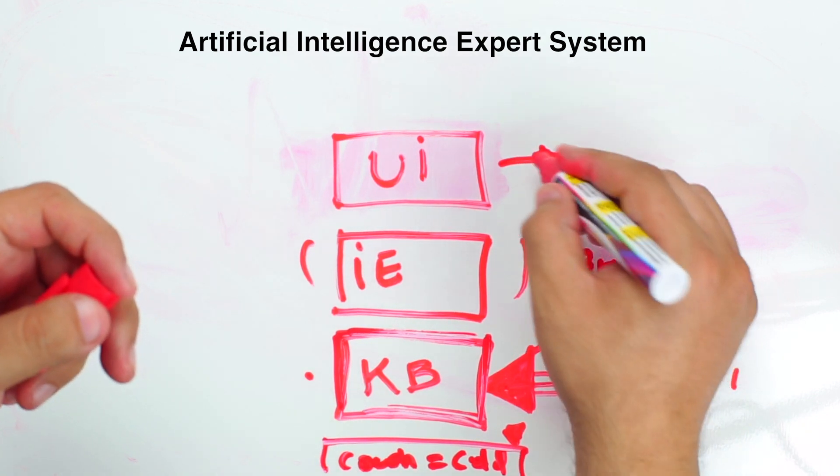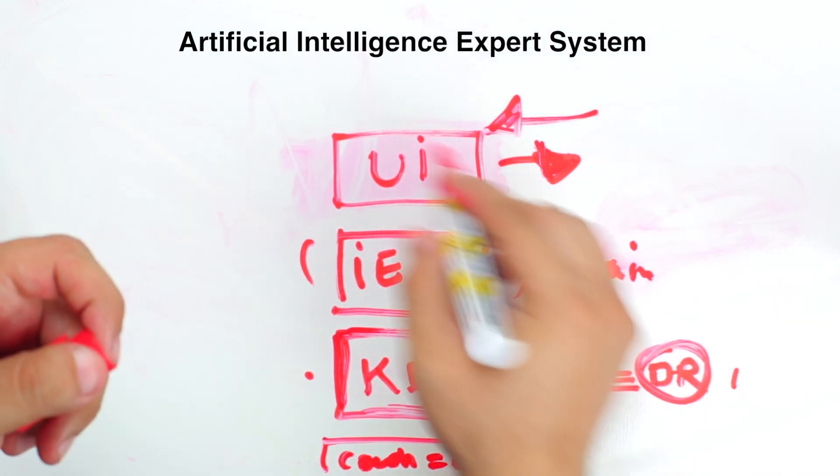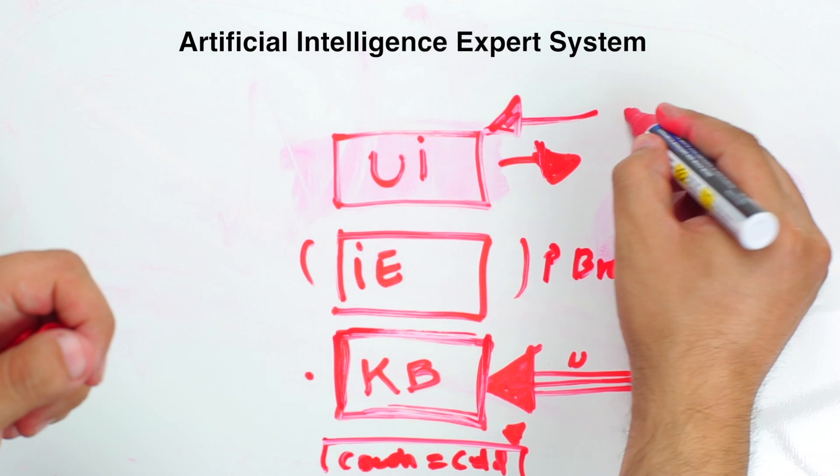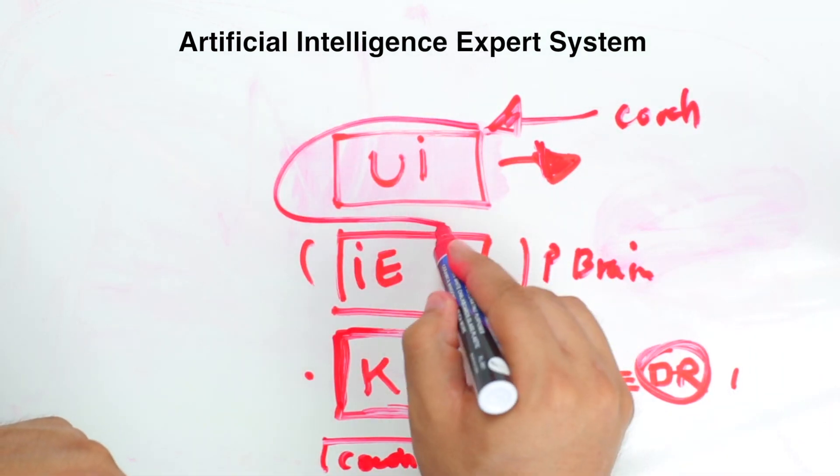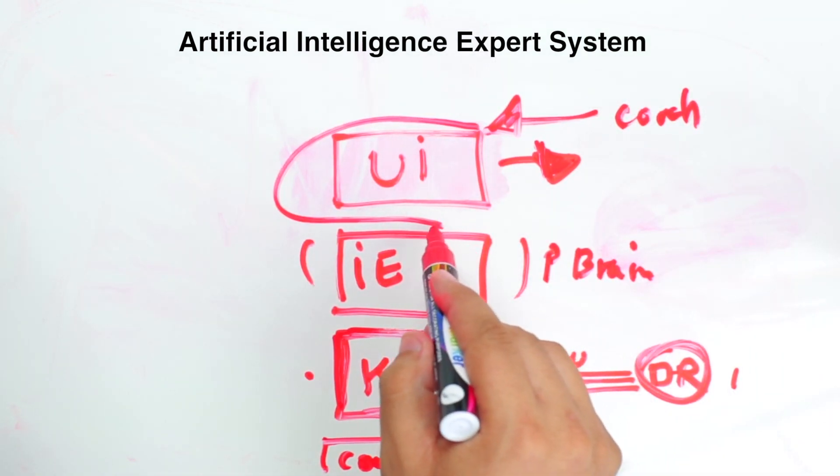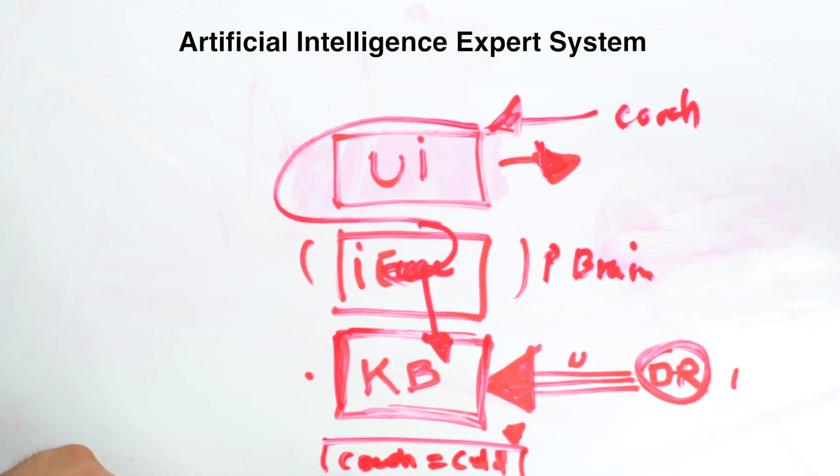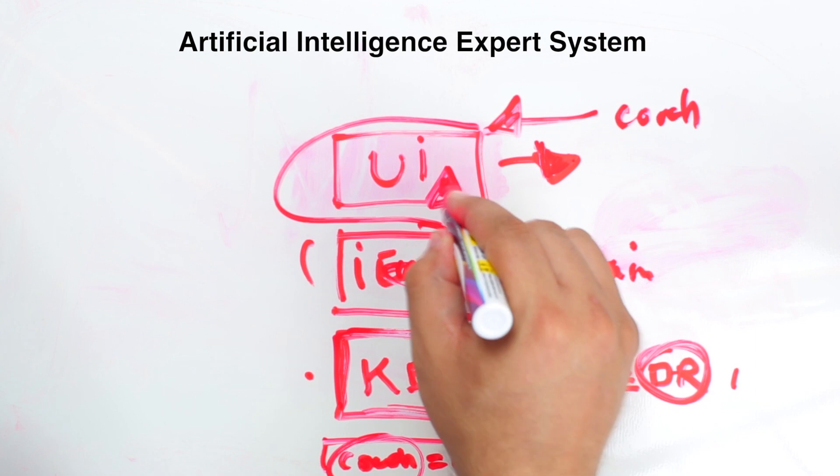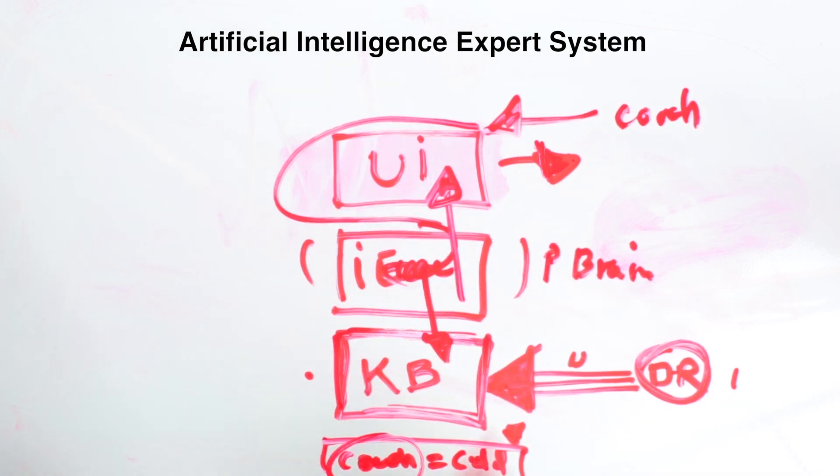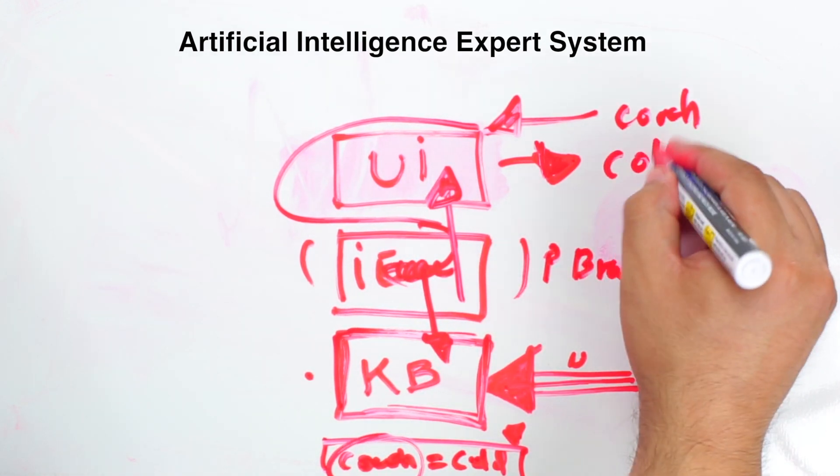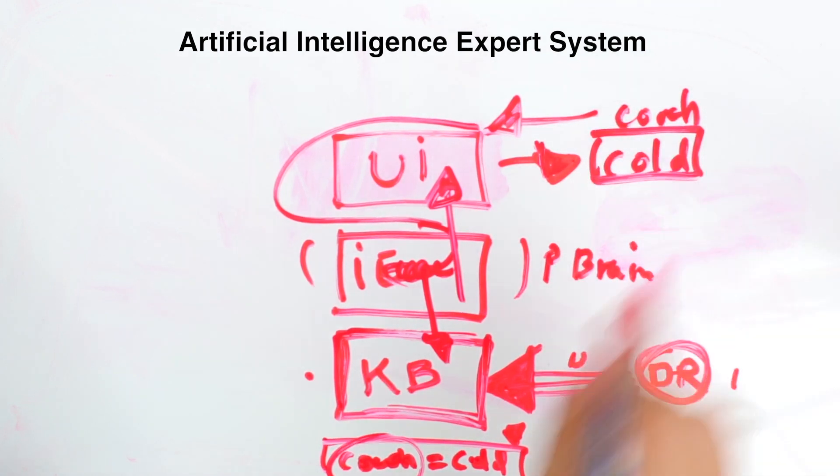So, if a user interface inputs his symptoms as a cough, it will go into the inference engine, and the inference engine will read, okay, this is a cough. Let's go into the knowledge base, and let's see what cough actually is. And so the inference engine will go back to the UI, or the user interface, and come back with a result, in this case, a cold. And so then the user would know, hey, I have a cold. These are my symptoms. After I ran through the expert system, it resulted as a cold. So now I have a cold.